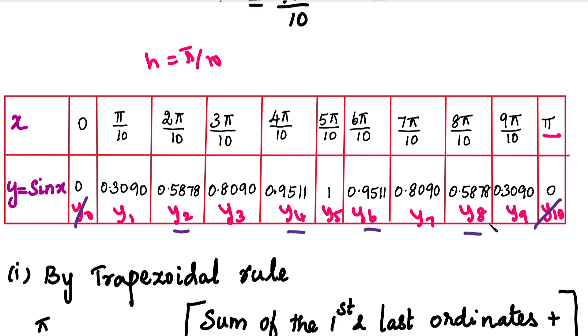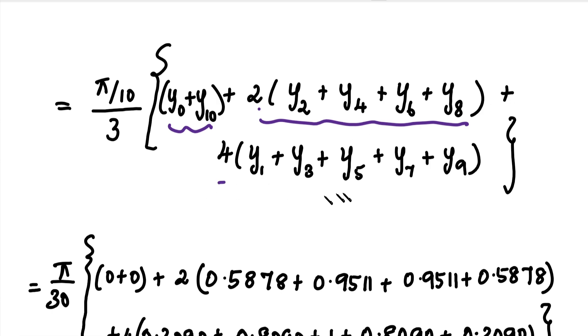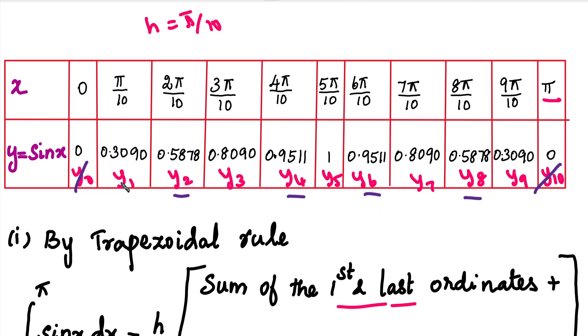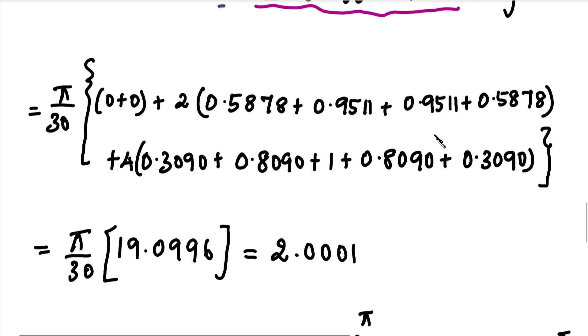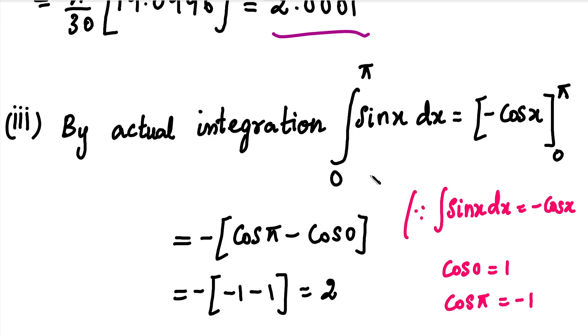Substituting the values gives 2.0001. Now for the actual integration: the integral of sin x dx equals -cos x. Applying the limits 0 to π, we get -[cos π - cos 0]. Since cos π equals -1 and cos 0 equals 1, we get -[-1 - 1] which equals 2.